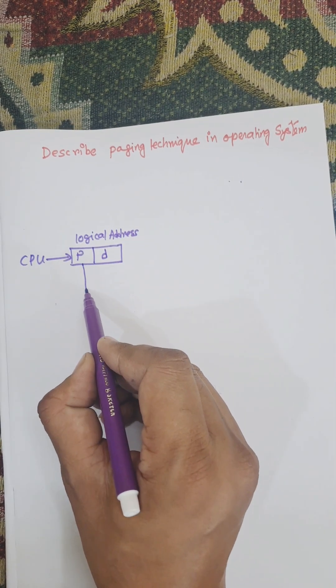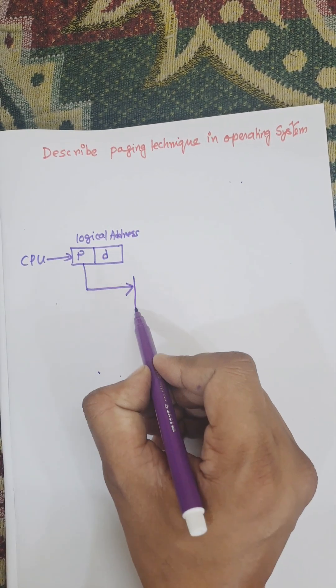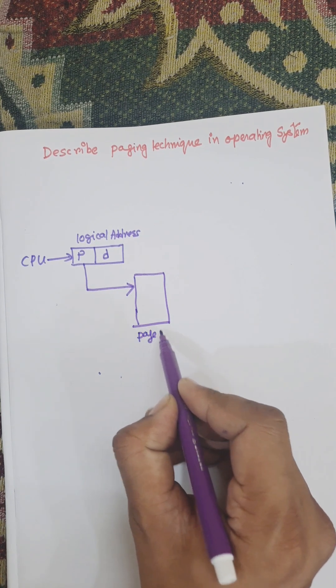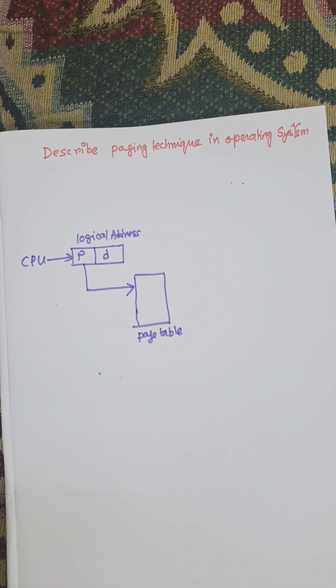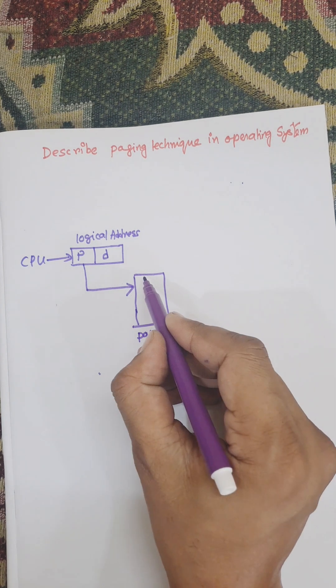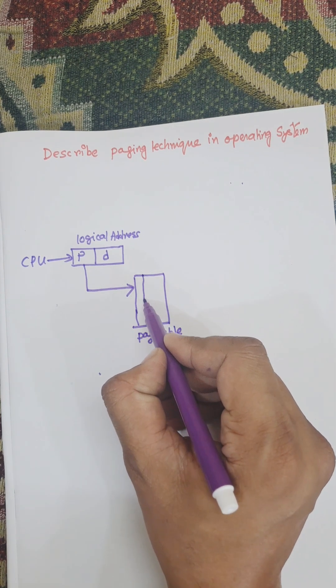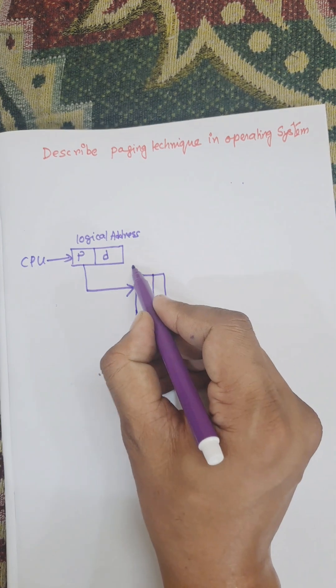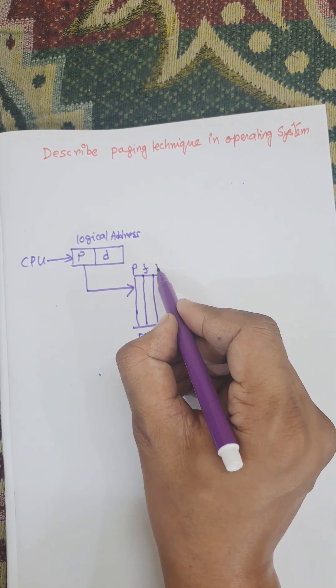Now page number is used to search the page table. This is the page table. Page number is used to search the page table. And from the page table, there are three parts: page number, frame number, and valid-invalid bit.